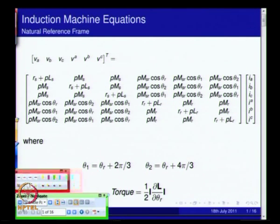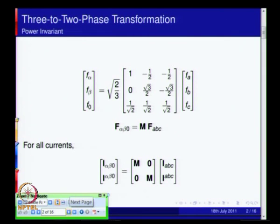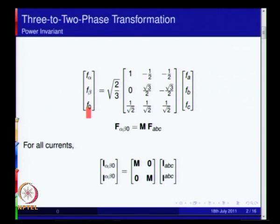Therefore we look for schemes of simplification — and these schemes have other uses as well. In order to simplify the description, you move on to a three-phase to two-phase conversion, and to do that we looked at MMF invariancy.